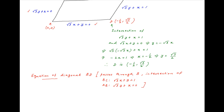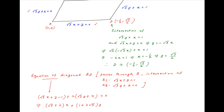Therefore, the equation of diagonal BD can be written using the family of lines as: (√3x + y − 1) + λ(√3y + x) = 0. Combining coefficients of x and y, this becomes: (√3 + λ)x + (1 + λ√3)y − 1 = 0.